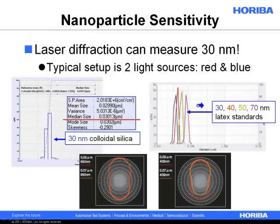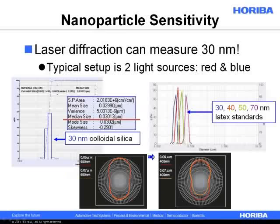There are different solutions on the market — some people use three lasers, some use different ways of polarizing the light. A very typical setup, certainly in Horiba and some other vendors, is to use a red laser and some sort of blue light source. In the Horiba LA-950, we use a blue LED. The effect is basically sensitivity and resolution for very small particles. If all you use is a red laser diode at 650 nanometers, you can't really distinguish the scattering pattern between 50 and 70 nanometers. But if you investigate with a blue light source at 405 nanometers, you can begin to see differences.